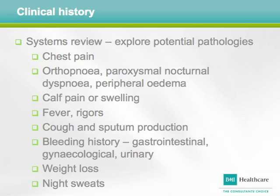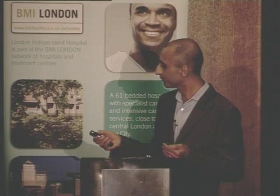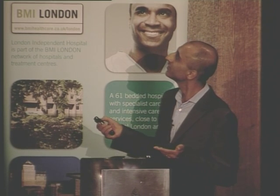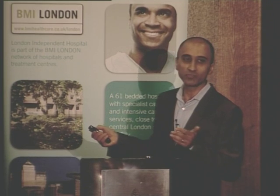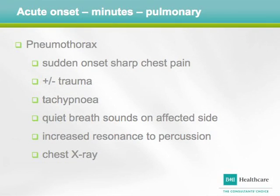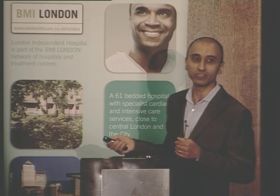Ask about any bleeding history - gastrointestinal, gynaecological, or urinary - which might indicate underlying anemia. Weight loss or night sweats may be more in keeping with a malignant process. Hopefully, with that combination of questions, you'll start to narrow things down. For a pneumothorax, patients can present with sudden onset of sharp chest pain. Very tall, thin patients may get a spontaneous pneumothorax. They'll be breathless with tachypnea. Breath sounds will be quiet on the affected side, with increased resonance on percussion, and a chest x-ray will confirm the diagnosis.